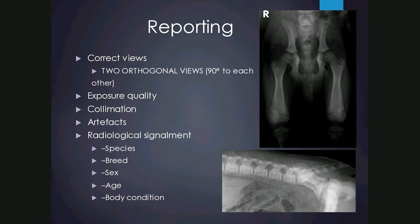For age we determine two things: whether or not the patient is skeletally mature or immature. These black radiolucent lines are the open physis, made of cartilage. In these two patients they are both skeletally immature, versus a skeletally mature patient where the physis will have disappeared.